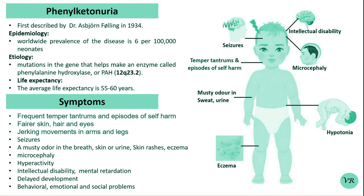Recent advances have introduced enzyme replacement therapies as a potential treatment for PKU. Palynziq (pegvaliase) is an enzyme substitution therapy approved for patients aged 18 years and older, and helps break down Phenylalanine in the blood.